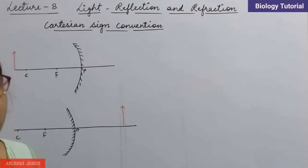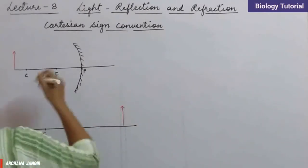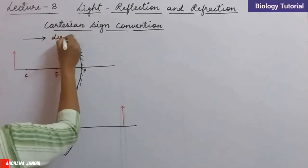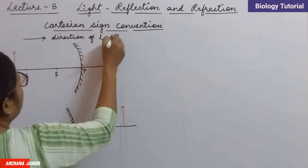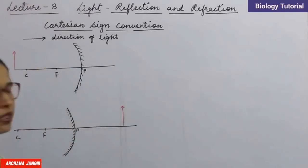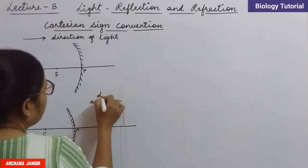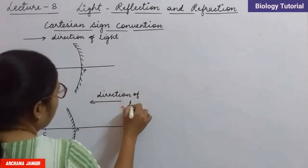In case of the mirror, the direction of light is this. So the object's light rays move in this direction and are incident on the mirror. In case of convex mirror, this is also the direction of light.